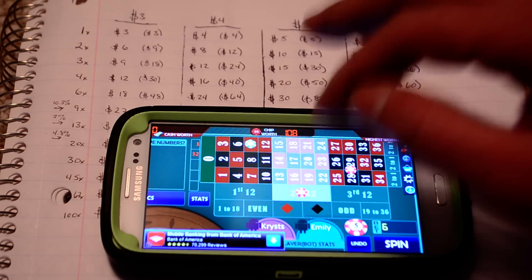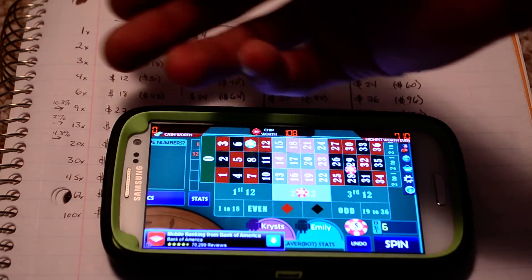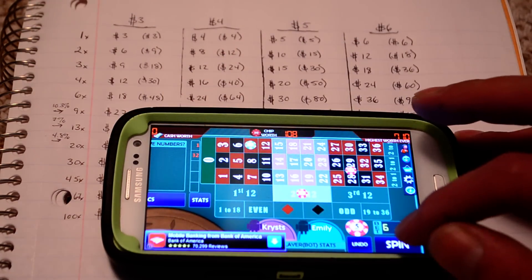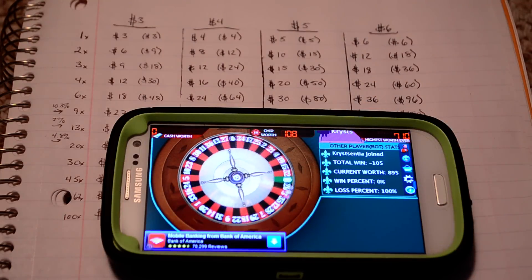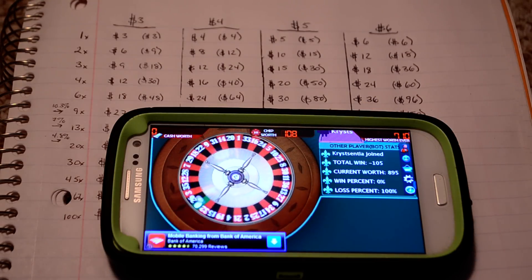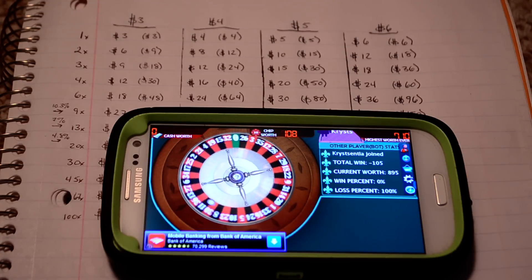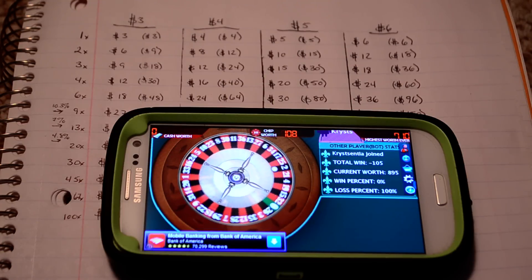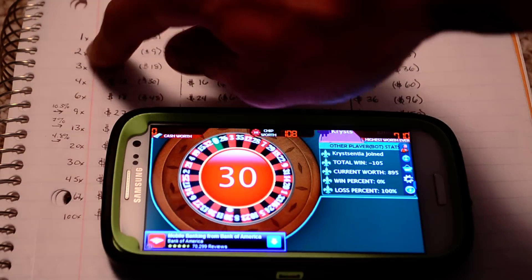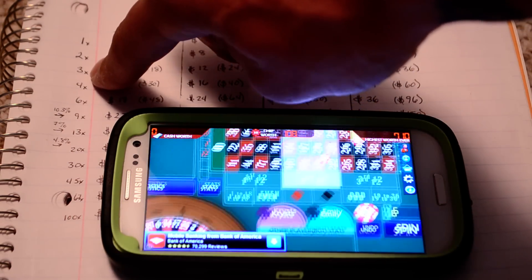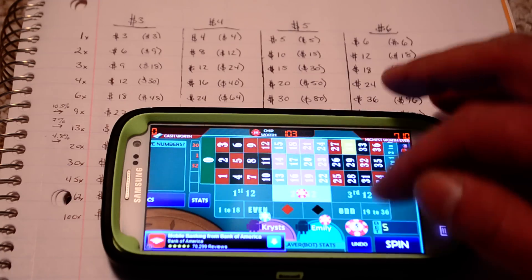And stay on that second twelve. You can't move off of it. You've got to keep staying on that. That's where your probability chances come in. So, just keep betting on the same one, no matter how many times you lose, so long as you can afford to keep doing so. So, I missed again, so now I'm going to go to the next part of the sequence three times my bet. So, now I'll bet nine.